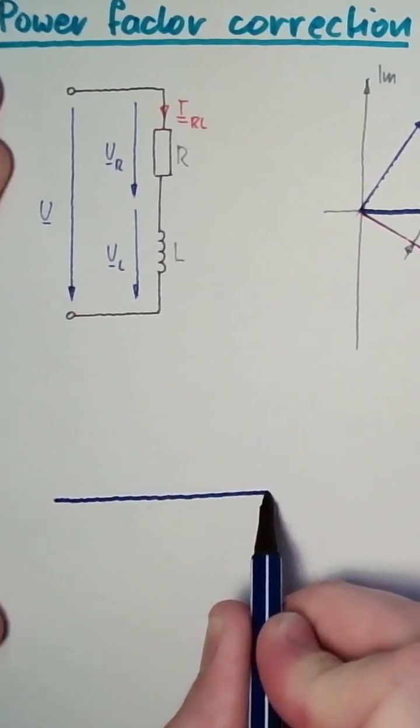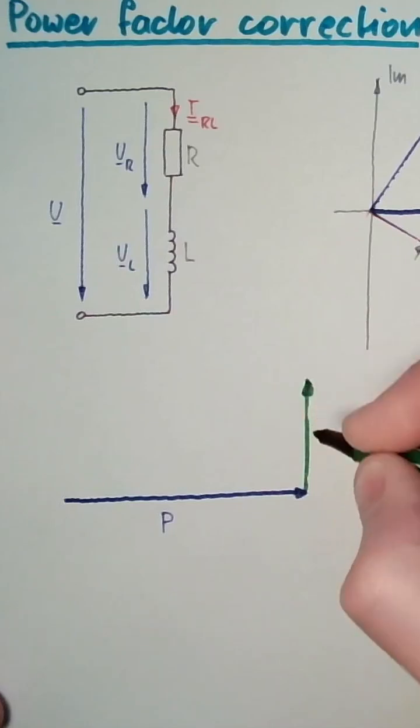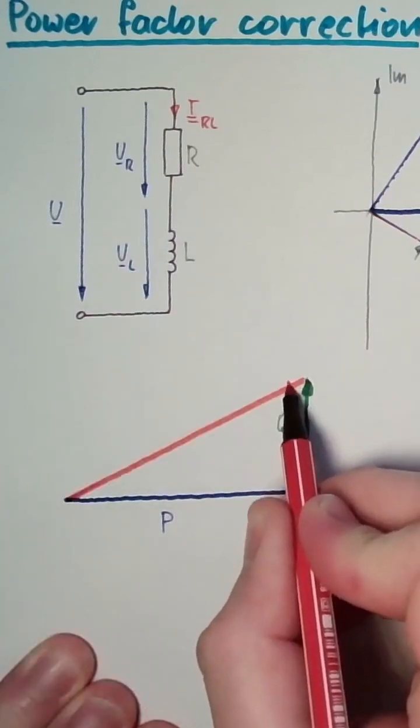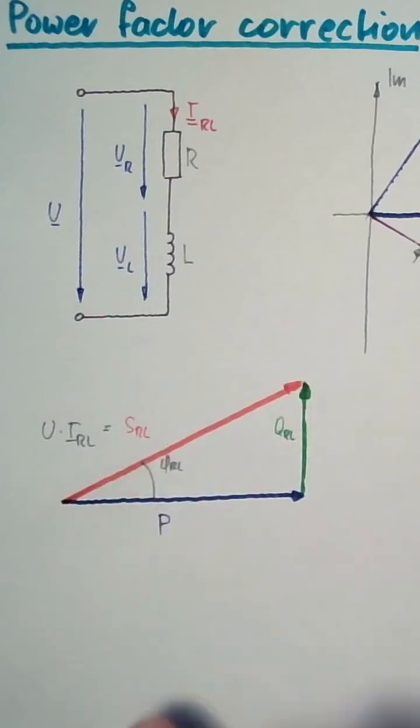Let's have a look at our power triangle. Here our active power P. We have a certain reactive power URL. We have an apparent power, this is SRL. Here we have our VRL. We want to reduce this V.